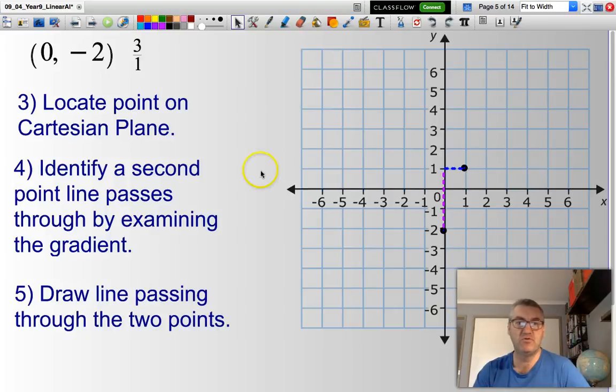Then, once we have 2 points, we can draw a line that passes right through those 2 points. Job done.